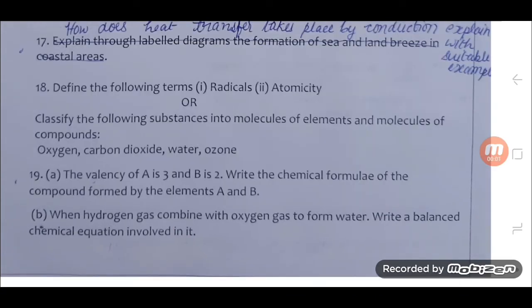19. A. The valency of A is 3 and B is 2. Write the chemical formula of the compound formed by the elements A and B. B. When hydrogen gas combine with oxygen gas to form water, write a balanced chemical equation involved in it.